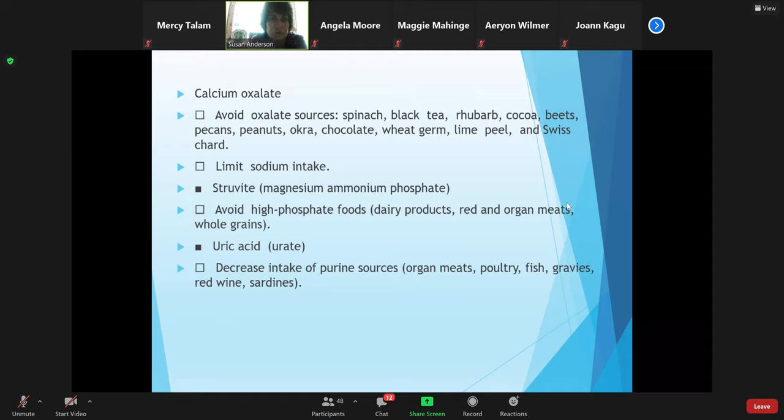Normal uric acid level - when someone has a likelihood or risk factor for kidney stones, we want it to be below six. That's a number that we usually aim for.